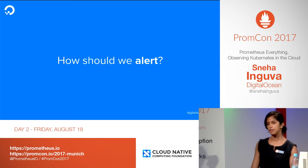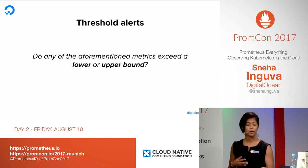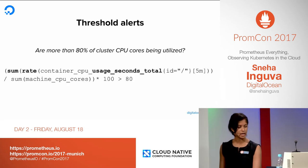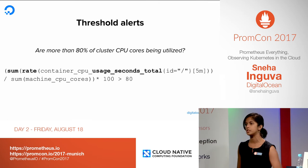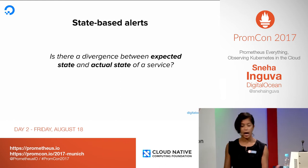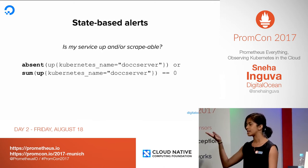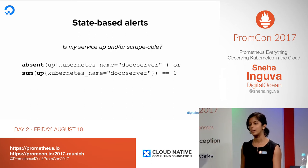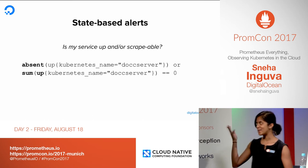How are we alerting? For the four golden signals and USE metrics, we use pretty much just threshold alerts — do any of these metrics exceed a lower or upper bound? With CPU, for example, are more than 80% of CPU cores being utilized? We use this for memory utilization as well to determine if we need to scale the cluster up or down. We also use state-based alerts like 'is my service up and scrapeable?' We've also used the absent metric because there were times when people would deploy a service to DOCC and it wouldn't successfully deploy, but no alert would go off because the target was never added.